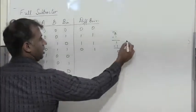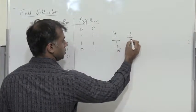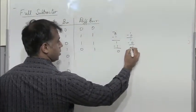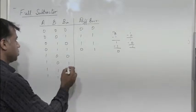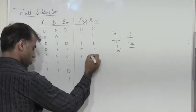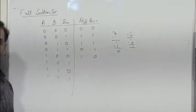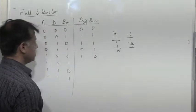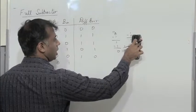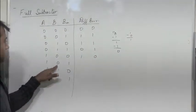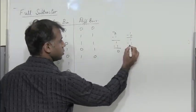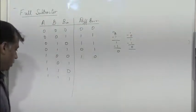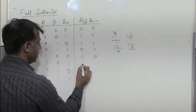Next, 1, 0, 0: 1 minus 0 is 1, minus 0 is 1. So difference is 1, there is no borrow — I get 1, 0. Next, 1 minus 0 is 1, and then I have minus 1, so I get 0. So we end up getting 0 and 0.